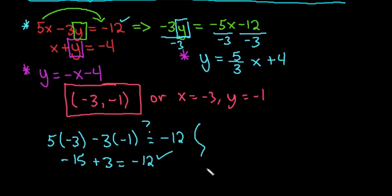We want to make sure that it works in the second equation as well. So I would just simply replace my x with negative 3, my y with negative 1. And we see that negative 3 plus negative 1 is negative 4. So it does work in both of them. So we can see that the solution makes sense.